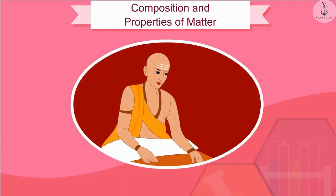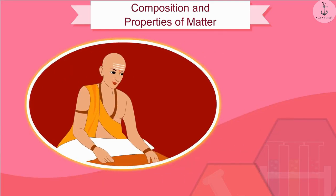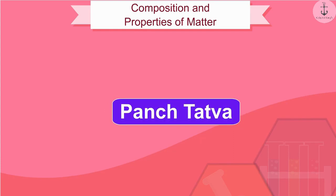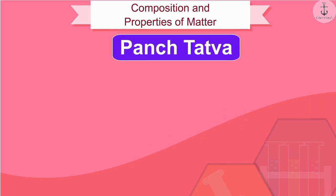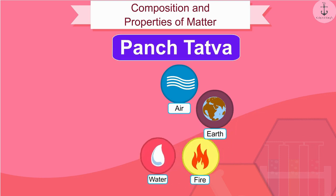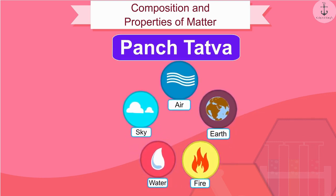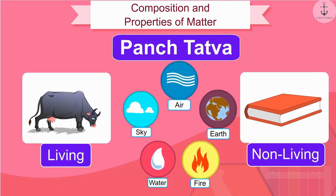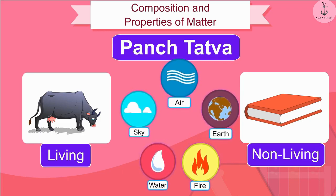Early Indian philosophers classified matter in the form of five basic elements which we know as panch tatva. These are the five elements: air, earth, fire, water, and sky. According to them, everything, living or non-living, was made up of these five basic elements.